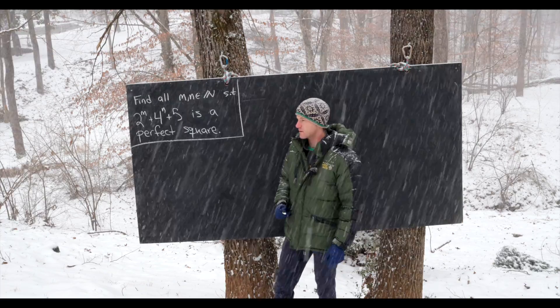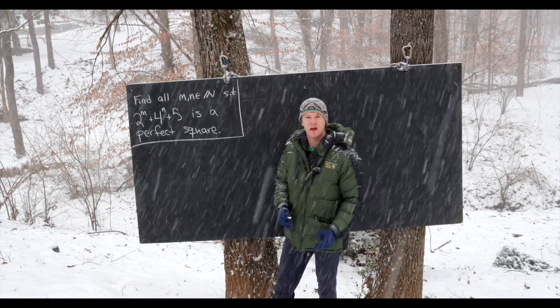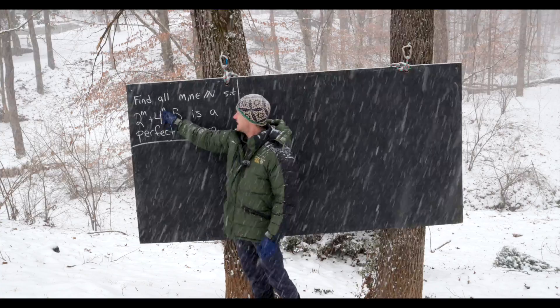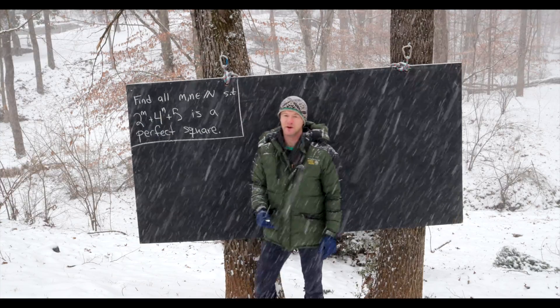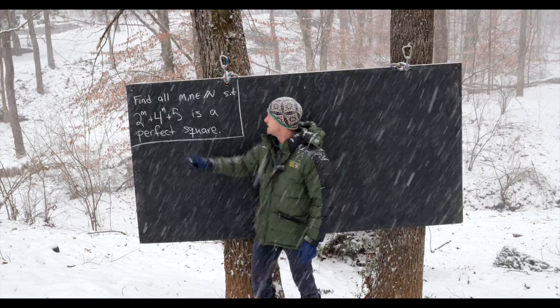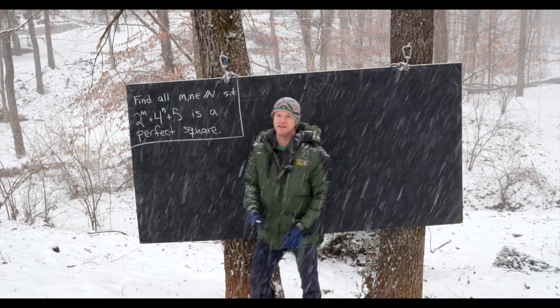And we're going to start by reducing modulo 8. Why mod 8? Well that's because if n is bigger than or equal to 2 and m is bigger than or equal to 3, these two guys reduce to 0 mod 8.